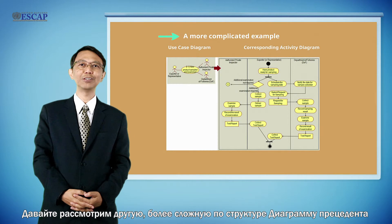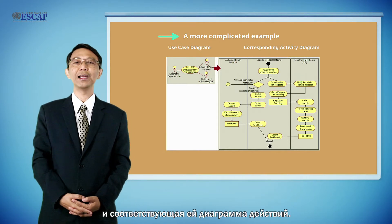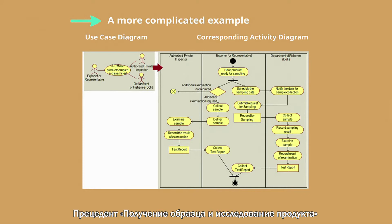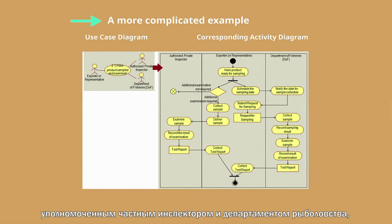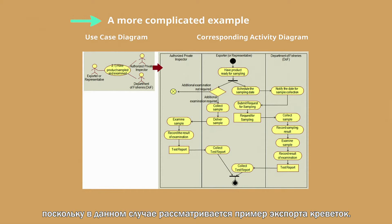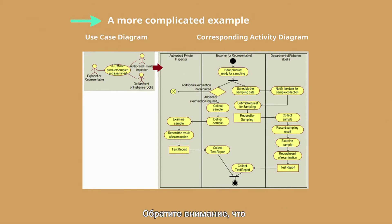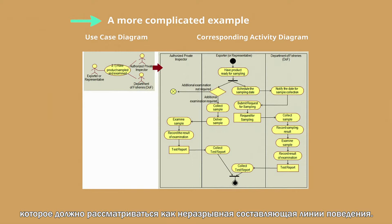Let's see another more complicated use case diagram and its corresponding activity diagram. The use case of 'have product sample and examine' involves three main actors: an exporter, an authorized private inspector, and a Department of Fisheries — since this is a case of exportation of shrimps. The activity diagram on the right-hand side illustrates the detailed activities and documentary requirements for this corresponding use case.